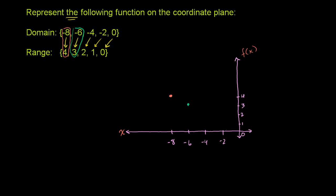You give me negative 4, this function will pop out 2. Negative 4 comma 2.